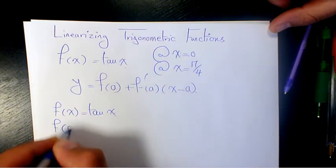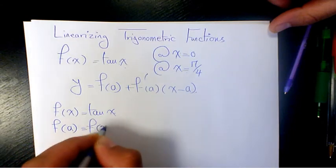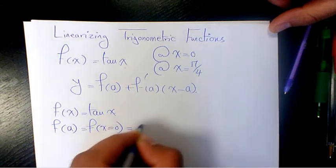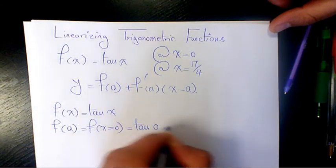f of a is going to be f of x when x equals zero, so that's going to be tan 0, which is 0.